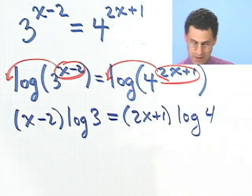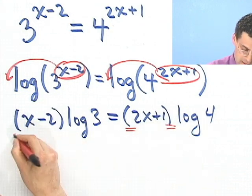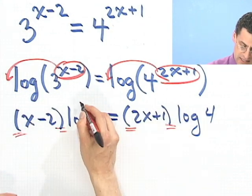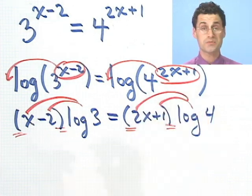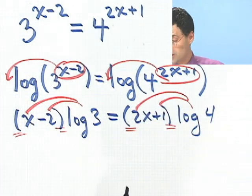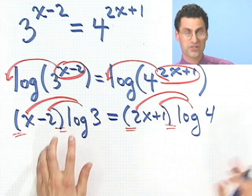Equals 2x plus 1 times log of 4. Notice these parentheses, by the way. It's because this log has to hit both terms. This log has to hit both terms. I have to distribute. Don't make the cardinal standard classic mistake of not distributing here.